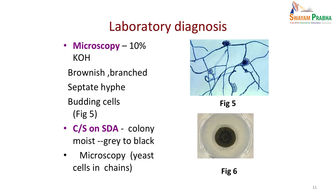On microscopy under 10% KOH, brownish branched septate hyphae are seen along with budding cells — a very typical appearance. On culture on Sabouraud's dextrose agar, we get brown to grey to black moist colonies, and on gram stain we see yeast cells in chains. When this microscopic and culture picture is seen along with brownish discolored patches, we diagnose it as tinea nigra. Treatment is similar to tinea versicolor.